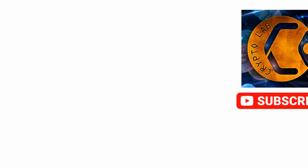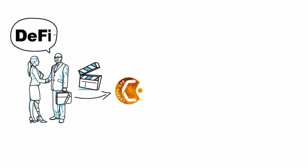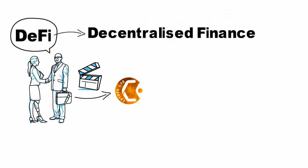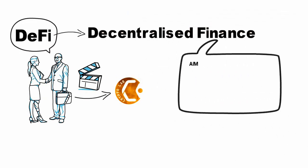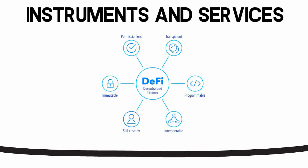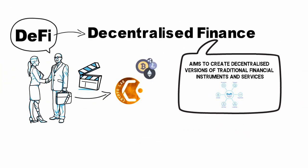DeFi is an abbreviation for decentralized finance. Simply put, it aims to create decentralized versions of traditional financial instruments and services. These provide more transparent and accessible options for financial tools — things like savings, loans, insurance, and so on. Essentially, any form of cryptocurrency is technically DeFi. What Bitcoin is to cash, DeFi is to traditional financial instruments.